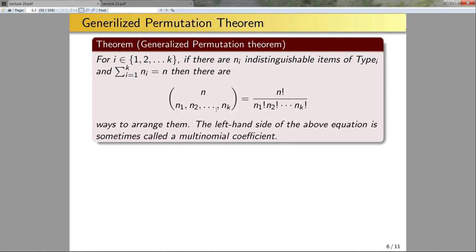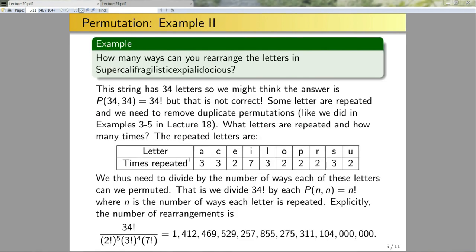Before moving on, let's re-examine the previous example in terms of this theorem. I only divided by the number of permutations for the letters that were repeated, but the theorem says I should divide by permutations for all letters. Consider the letter 'd' — there's only one 'd', so I divide by the number of ways to rearrange d with itself, which is 1. Dividing by 1 doesn't change the answer. In practice, you only need to divide by the n_i factorial values greater than one.